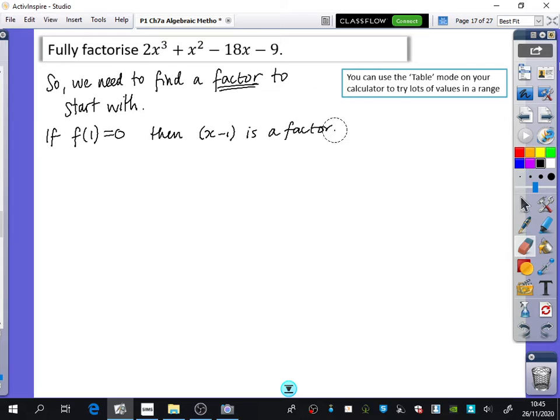Now, I've said that if f of 1 is equal to 0, then we would know that x minus 1 would be a factor. And if you subbed in 2, then x minus 2 would be a factor. But we actually just need to do a bit of guesswork to find out what it would be.